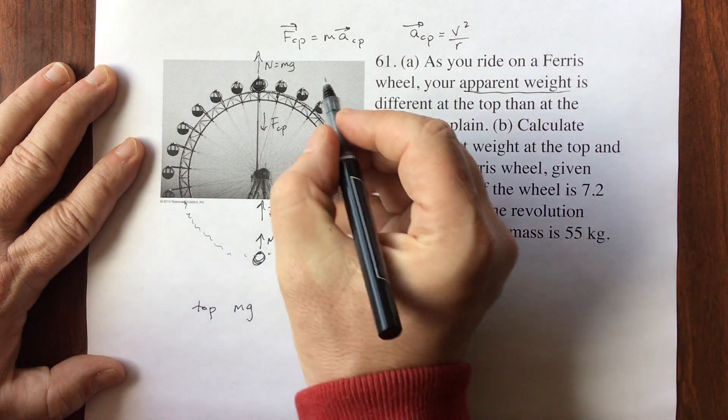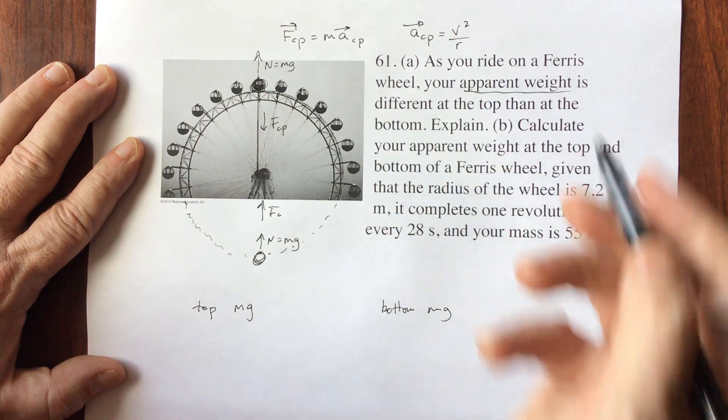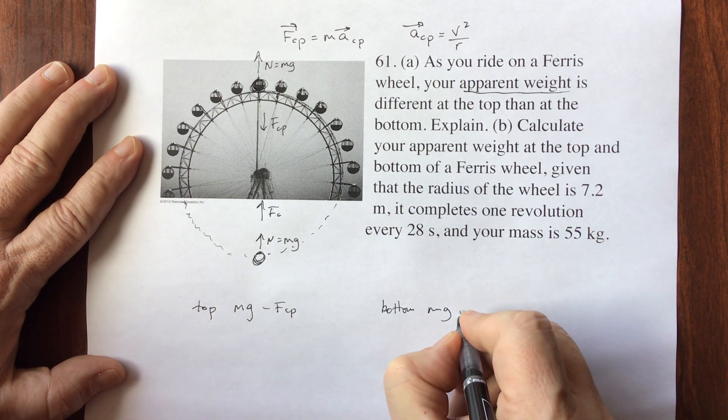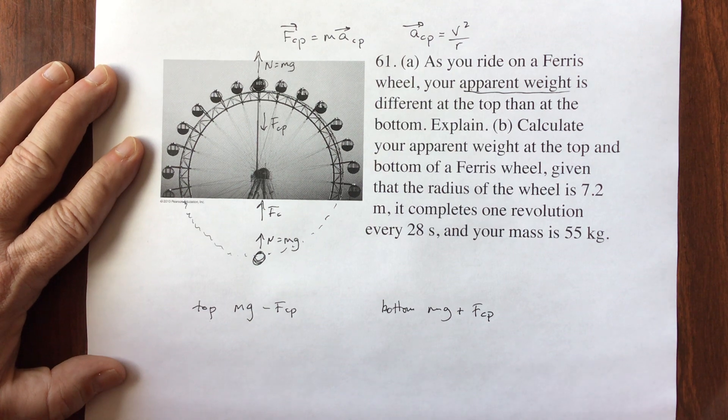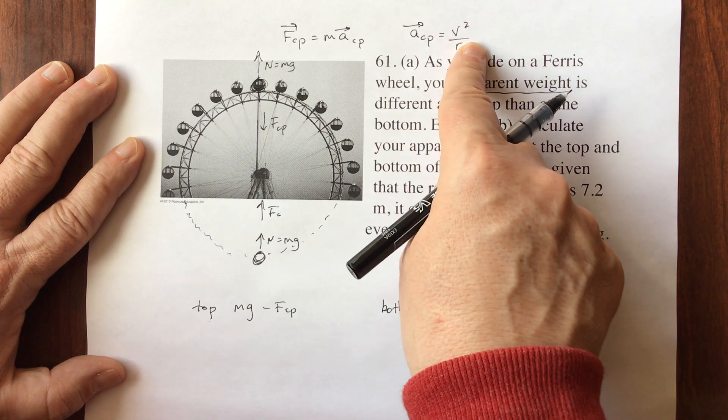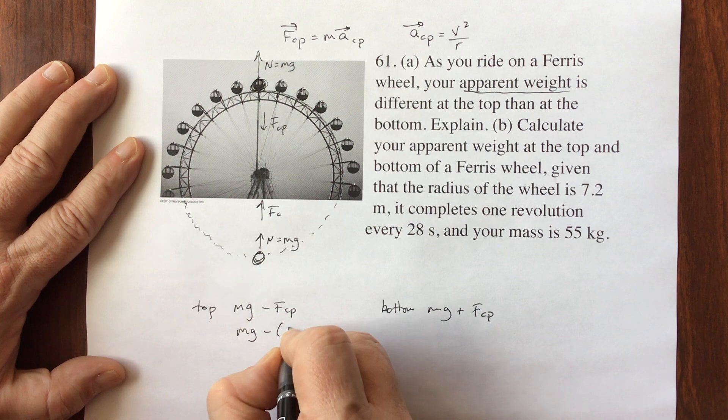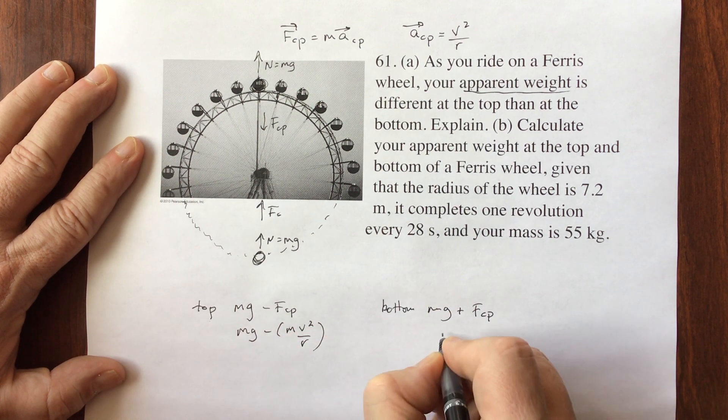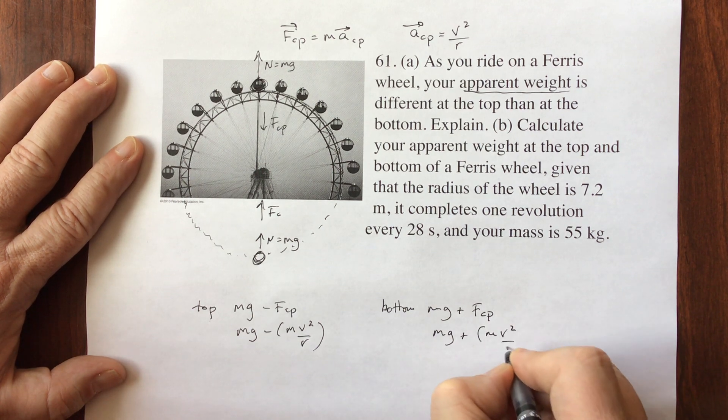So what does that mean? That means these two are opposite. So at the top, I have mg minus your centripetal force, and at the bottom, I have mg plus your centripetal force. Well, your centripetal force is m times a, and a is v squared over r. So I've got mg minus m v squared over r, and mg plus m v squared over r.